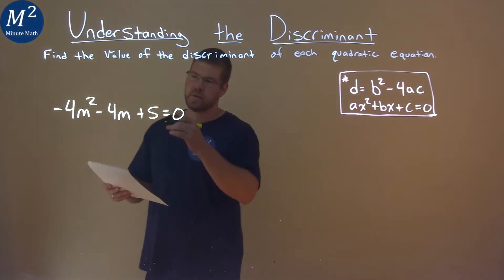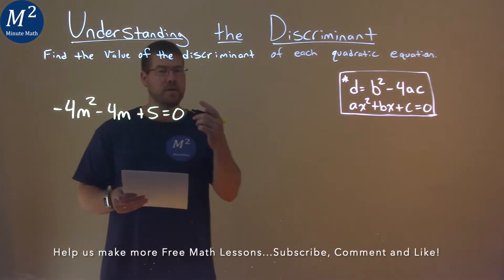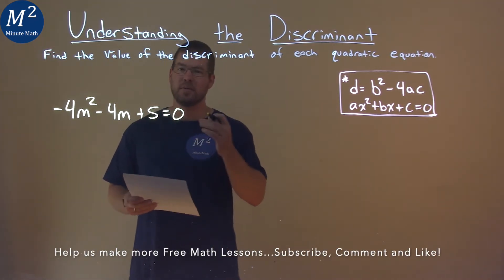We're given this problem right here. Negative 4m squared minus 4m plus 5 equals 0, and we need to find the discriminant.